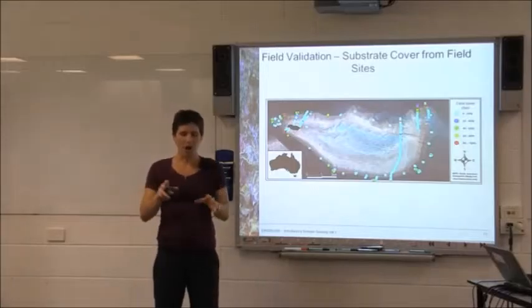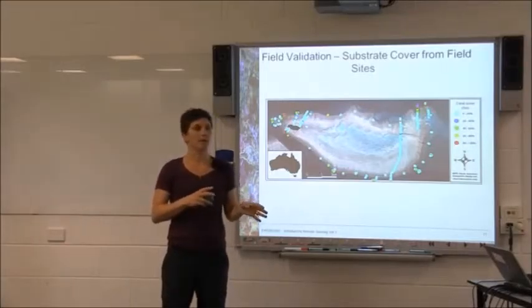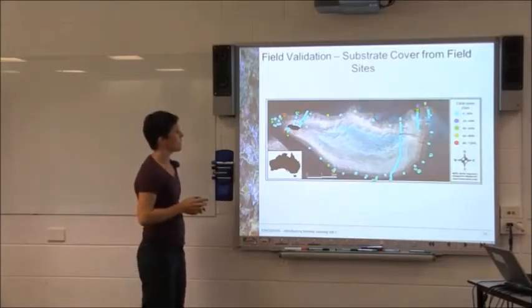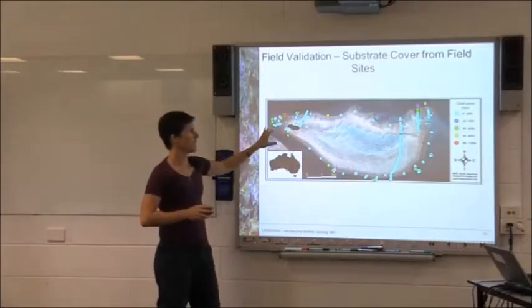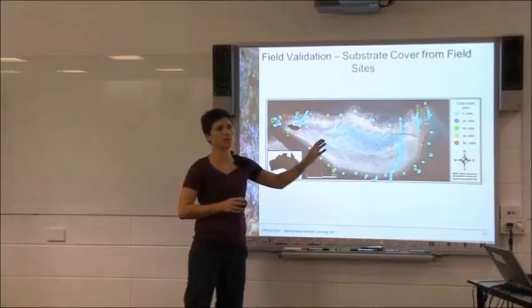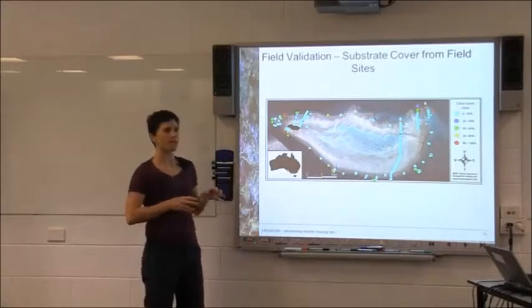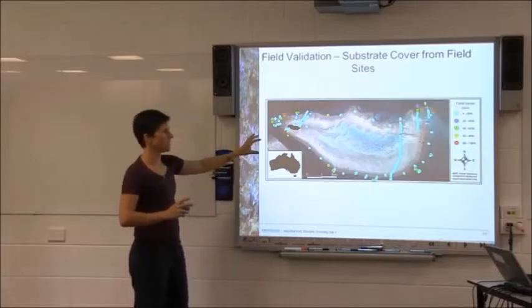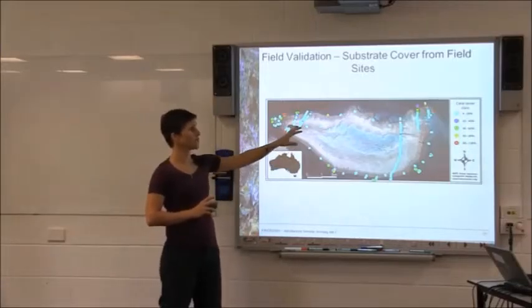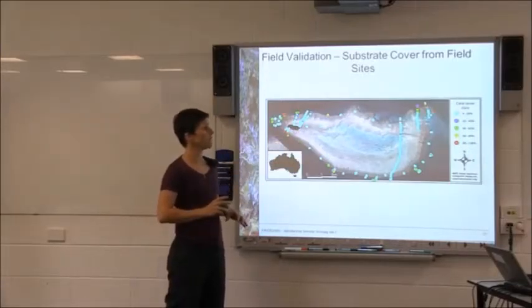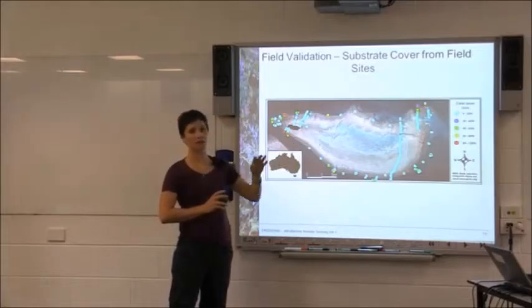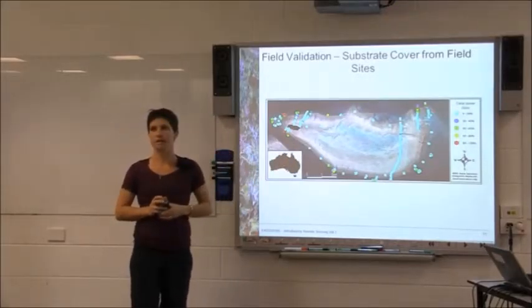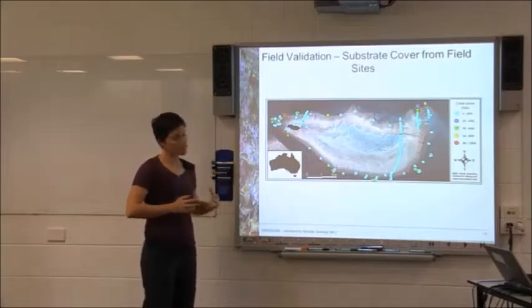Once we've compiled all that data — and bearing in mind that everything has a GPS location associated with it — it's possible to create a map of the individual field sites that we went to and assess the amount of coral at those particular locations. That's just basic colour coding of each of the sites we visited, with low coral cover areas in cyan and higher coral cover in red, based purely on field data.